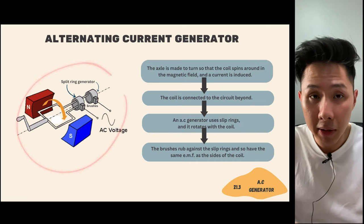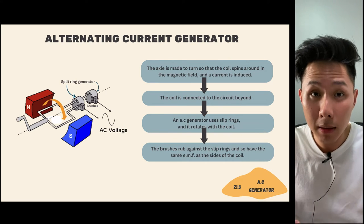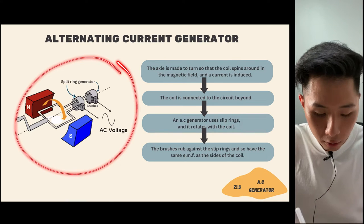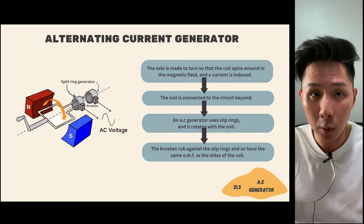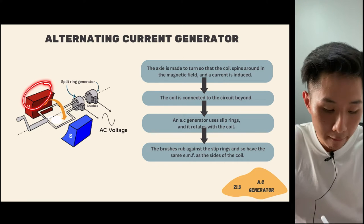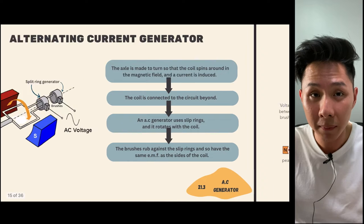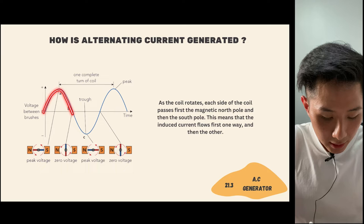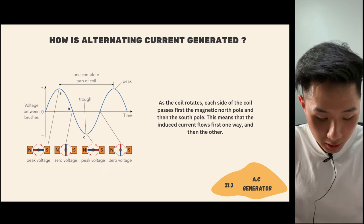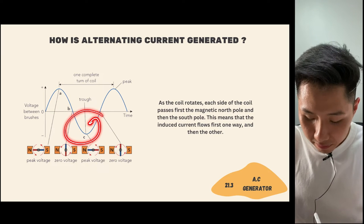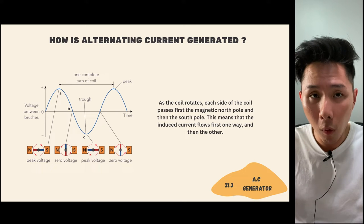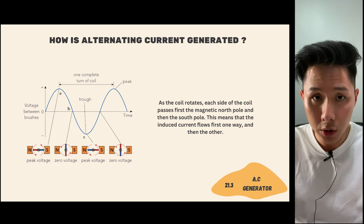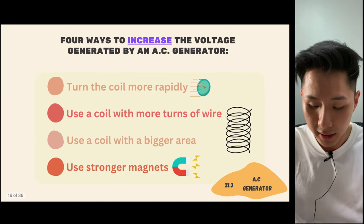It's hard to explain this concept with a 2D image, so I recommend watching the video linked in the description — that explanation of how an AC generator works is very clear. The alternating current is generated because in one direction of rotation a positive voltage is produced, and in the other direction a negative voltage. I recommend watching the linked video on alternating current as well.